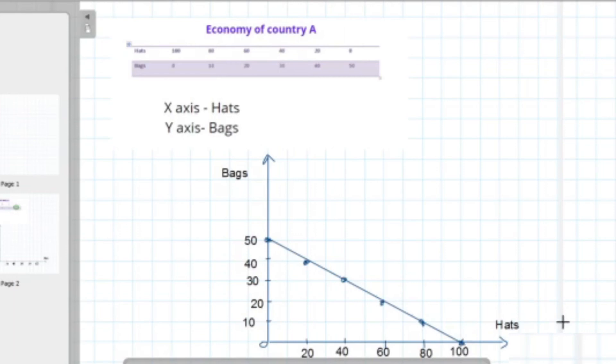Next, it's important for you to label your PPF. When labeling, don't forget to mention for which country we constructed this PPF. So, PPF for Country A.